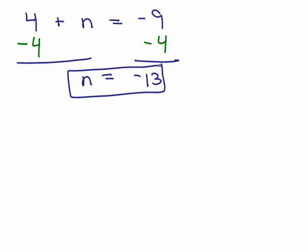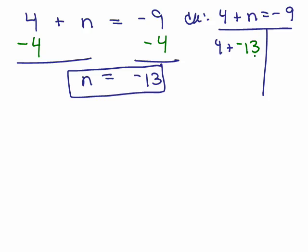Now, I usually show my check right next to it, so I'm going to do it this time. 4 + n = -9. I'm going to plug in -13, and 4 + (-13) is -9, and on the right-hand side I have -9, so I've checked my answer, so there you go. You've already boxed your answer, you know it's correct,